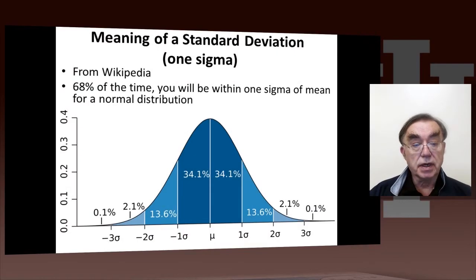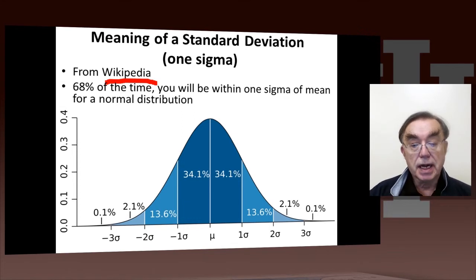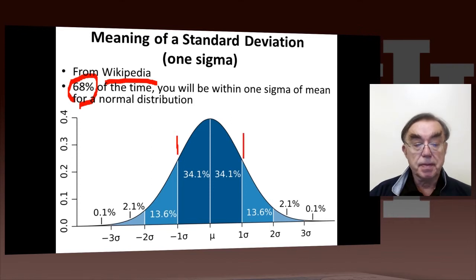This graph comes from Wikipedia, which, as I pointed out, is a fount of wisdom. It gives a nice plot showing you the chance of various things happening. It says that 68% of the time, you will lie between mean minus 1 sigma and mean plus 1 sigma.